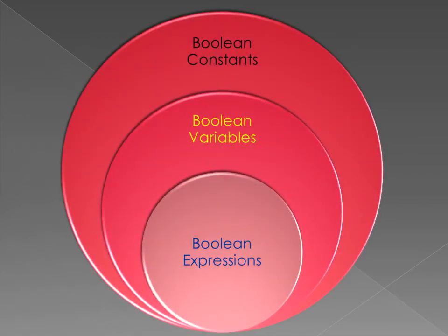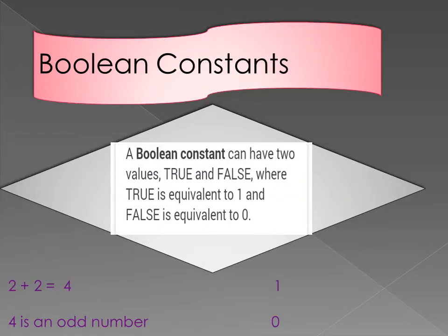Today we will explain the terms boolean constants, boolean variables, and boolean expressions. First of all, we will discuss boolean constants. A boolean constant can have two values — it may be true or false — where the true value must be equivalent to 1 and false must be equivalent to 0.